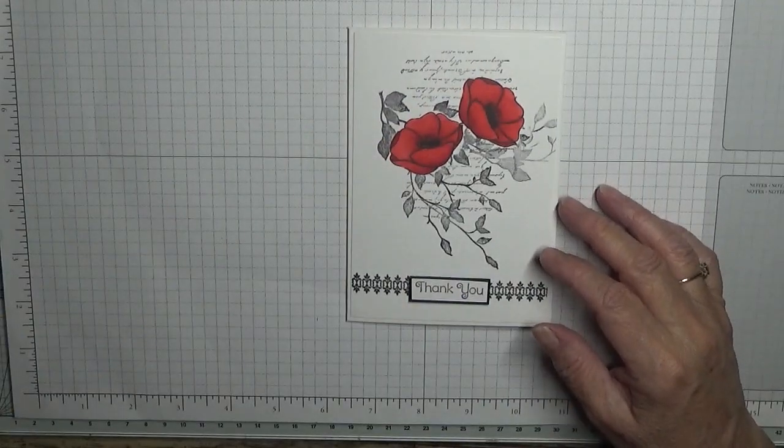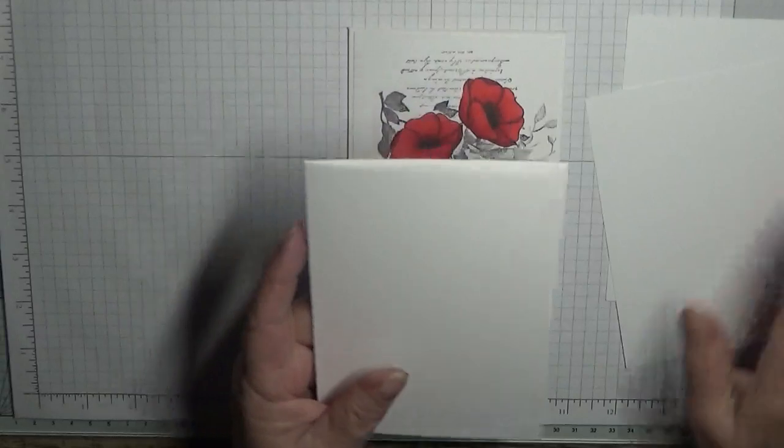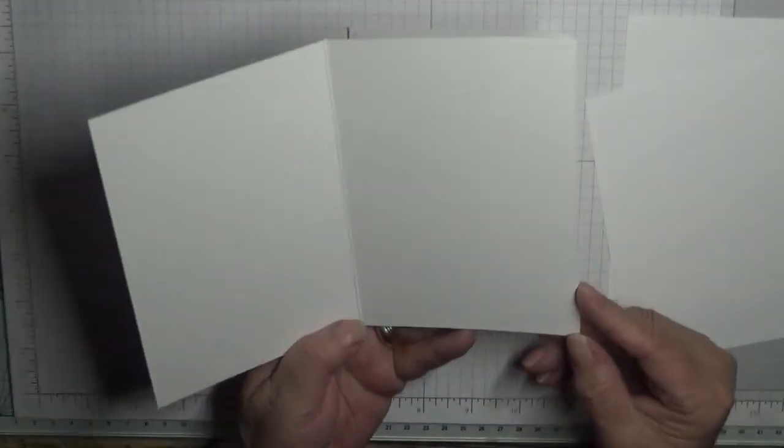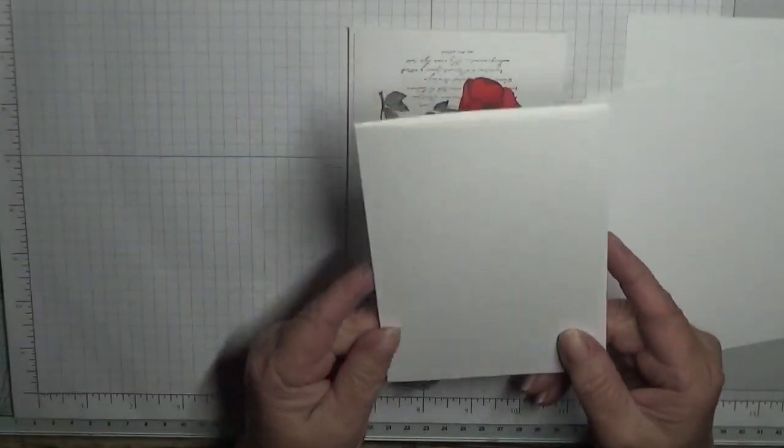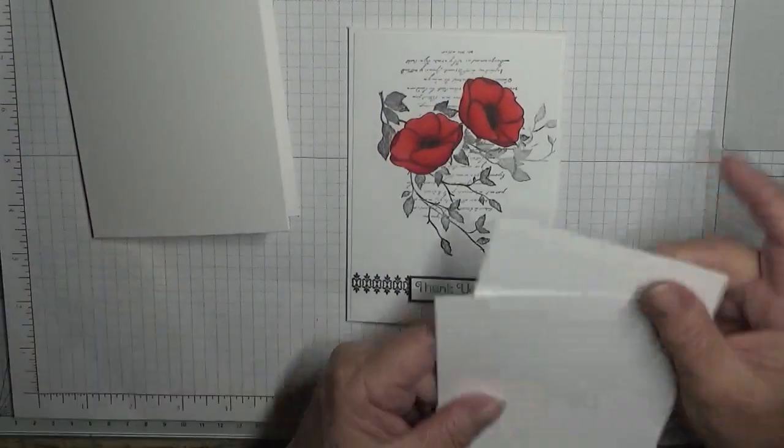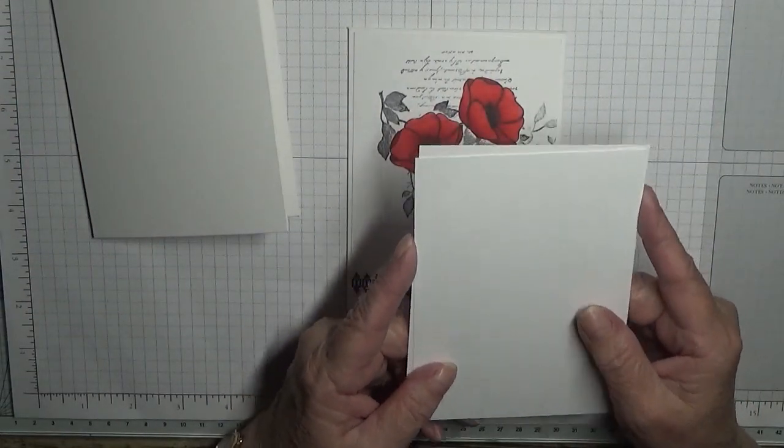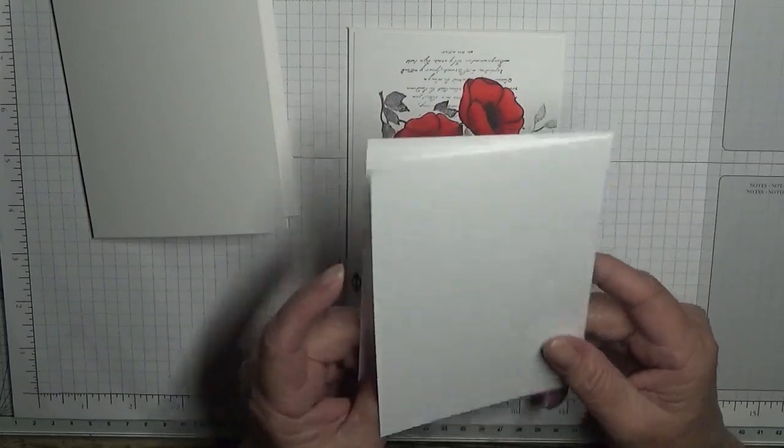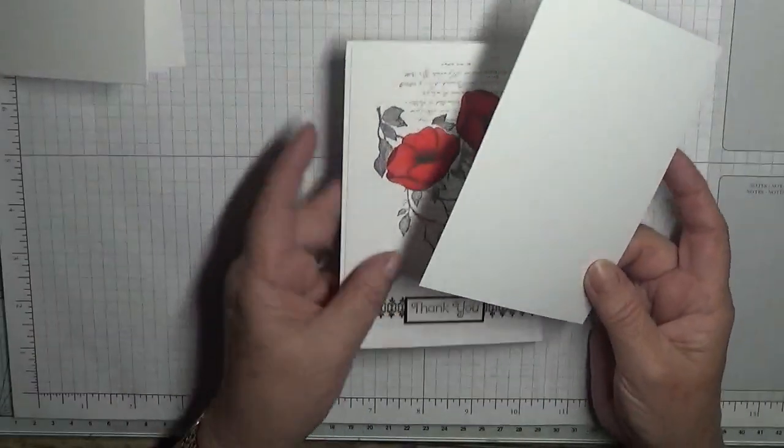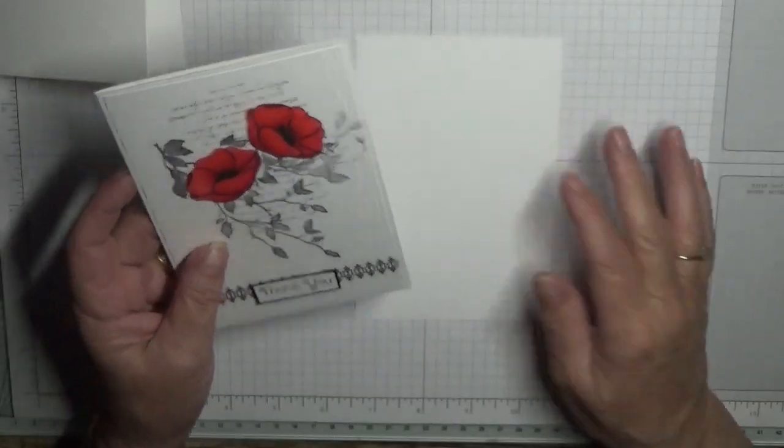Cardstock I used, I have a white card base of eight and a quarter by five and seven eighths scored at four and one eighths and burnished and I have two pieces of white cardstock at five and five eighths and three and seven eighths. One for the inside and one for the front.